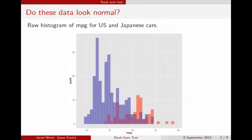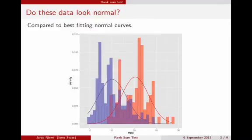We are now considering what would happen if we wanted to try relaxing those assumptions, or if we thought that maybe normality was not appropriate. To take a quick look at whether normality would be appropriate, here's the data rescaled for comparison with these bell curves — the best-fitting normal probability density functions for the Japanese and American cars. There's a blue curve for the blue histogram and a red curve for the red histogram. Ideally, the data would look somewhat similar to these bell curves, but these data really don't look that similar and don't appear particularly normal.